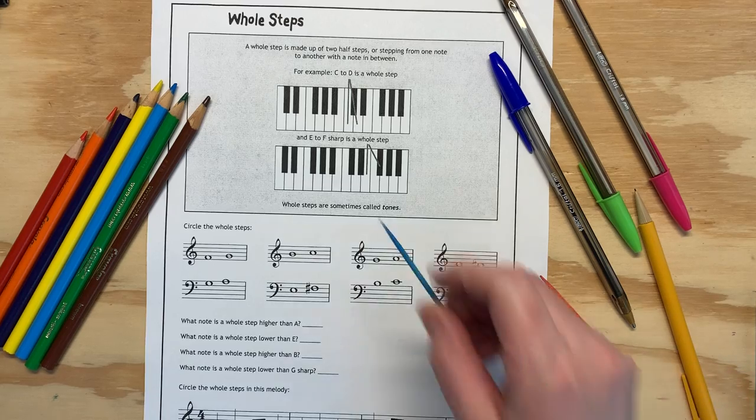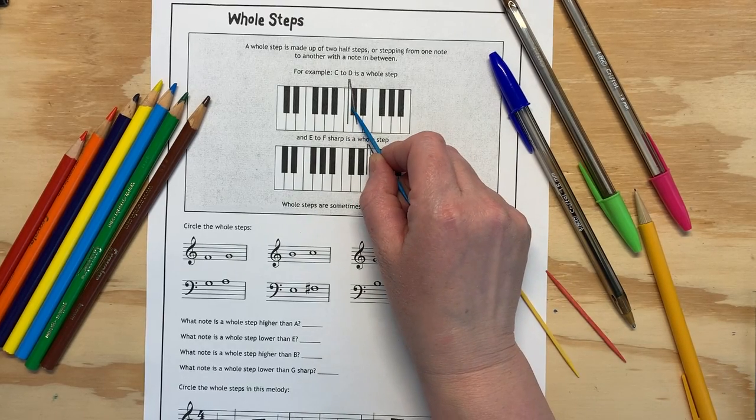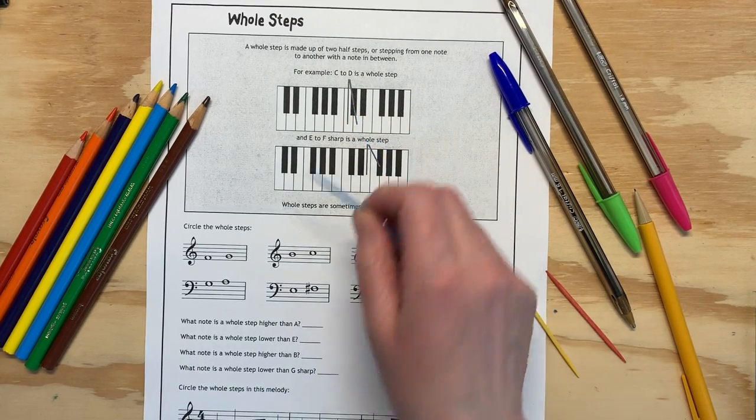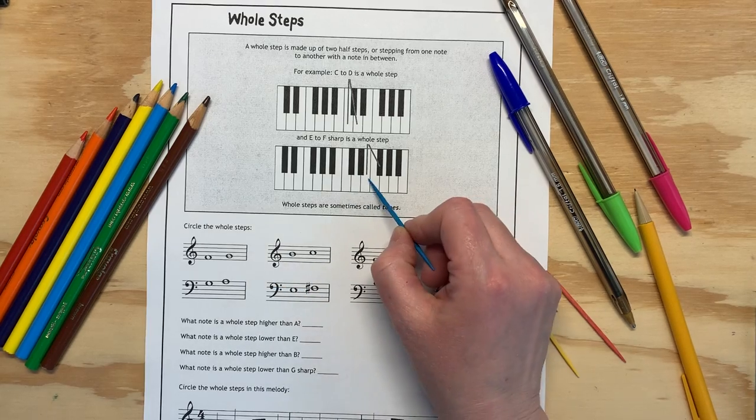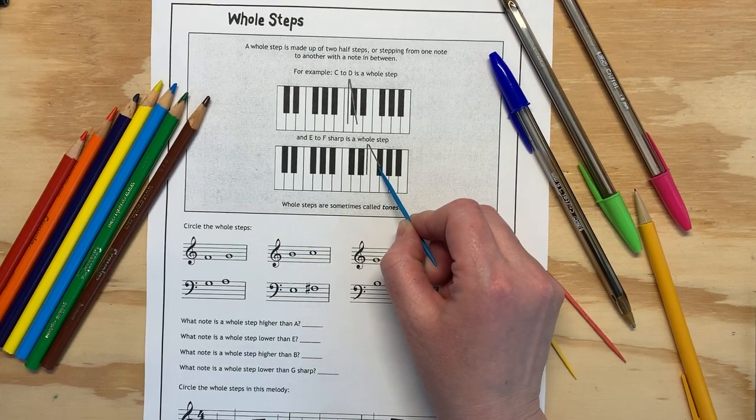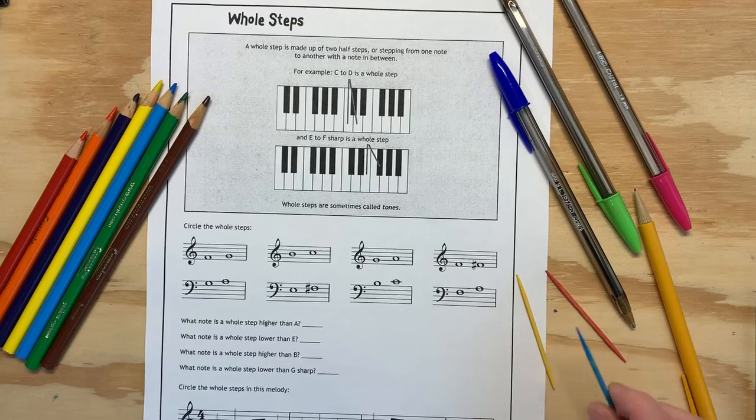C to D is a whole note because we move and we go past the black and we go here. E to F sharp. E, we take F and then that makes that F sharp. Whole steps are sometimes called tones.